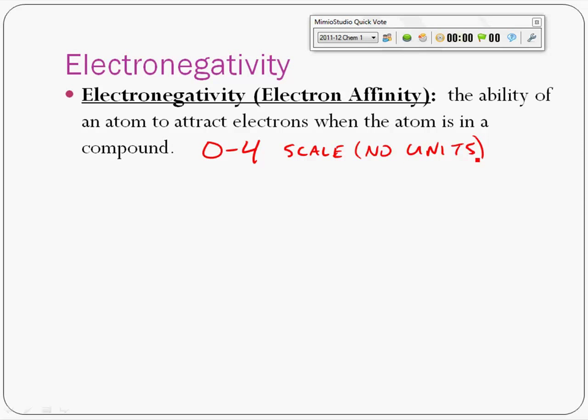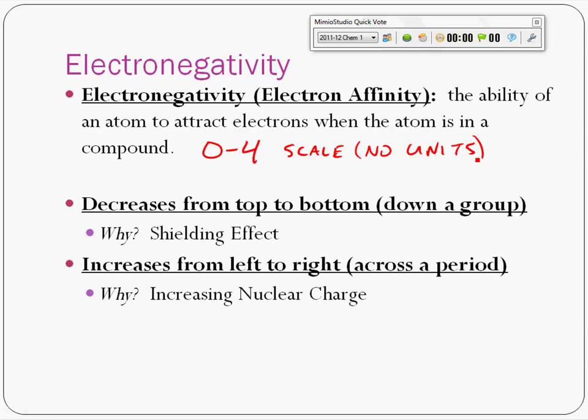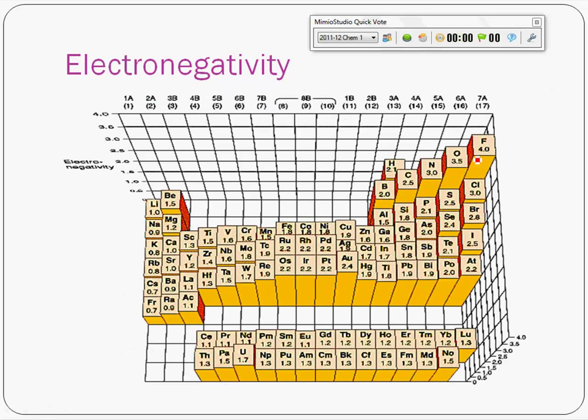Take a look at this. This is just another representation of a periodic table, and if it has a higher electronegativity, it's going to be higher on the chart. Looking at this chart, which atom has the highest electronegativity? Fluorine.